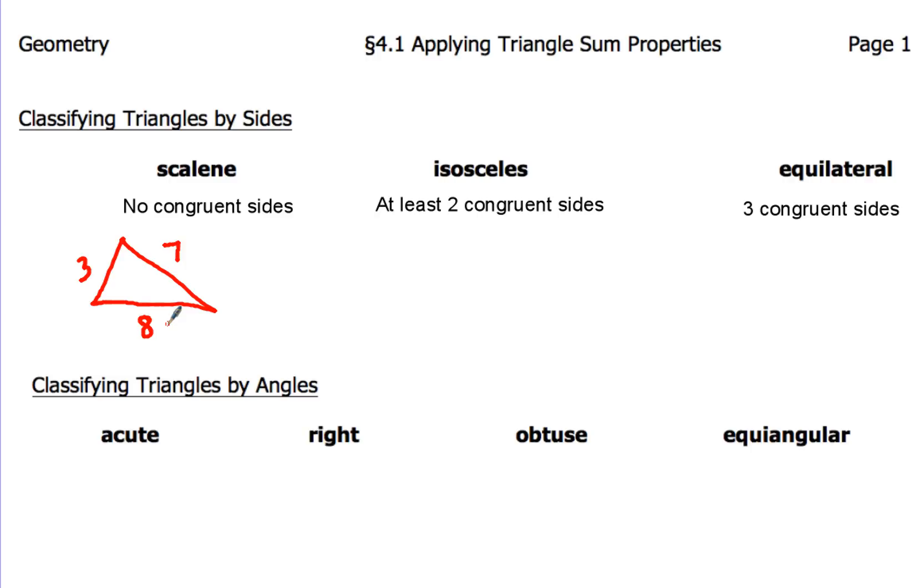So when you take a look at a scalene triangle, the measurements, the lengths of all the sides, well, they're all different. Now, isosceles triangle, oh this one's going to get fun, because I'm going to talk a lot about some of the properties for this guy. Isosceles triangle's going to have at least two congruent sides. They're going to be marked like that.